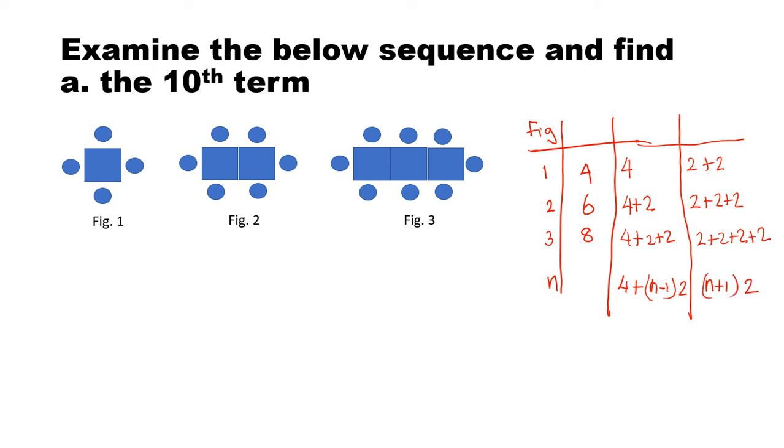So we could use either of these. But I am just going to use this because it looks simpler. Now, the 10th term is going to be n plus 1. 10 plus 1 times 2. So that would be 11 times 2. And it should have 22 circles.